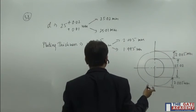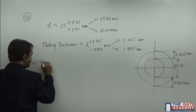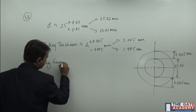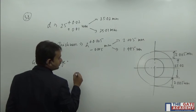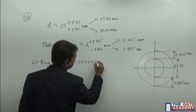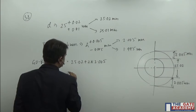So you can see that the go-ring gauge has the dimension of 25.02 plus 2 into 2.005, that's all.